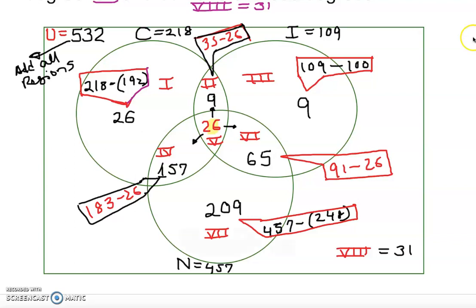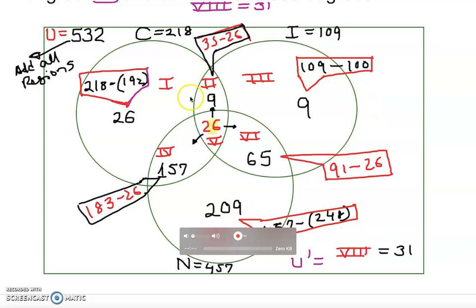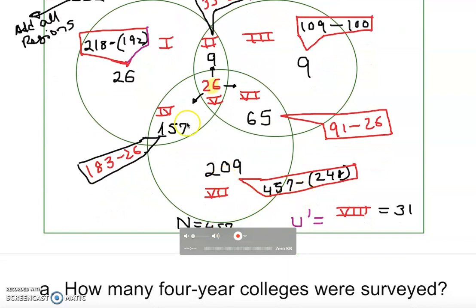Once we finish filling in the diagram, we have region 8 — that's U prime, the complement of the universal set, equal to 31 — the colleges that don't offer any of these degrees. For information technology only: 109 minus 9 minus 26 minus 65 equals 9. For nursing only: 457 minus 157 minus 26 minus 65 equals 209.